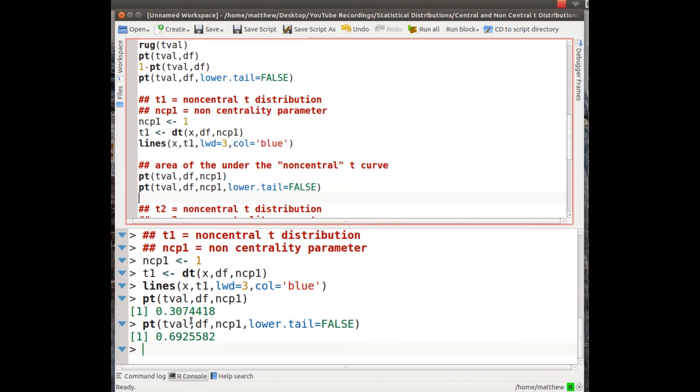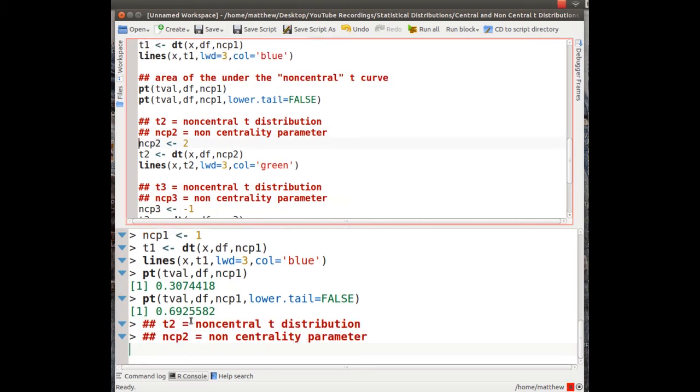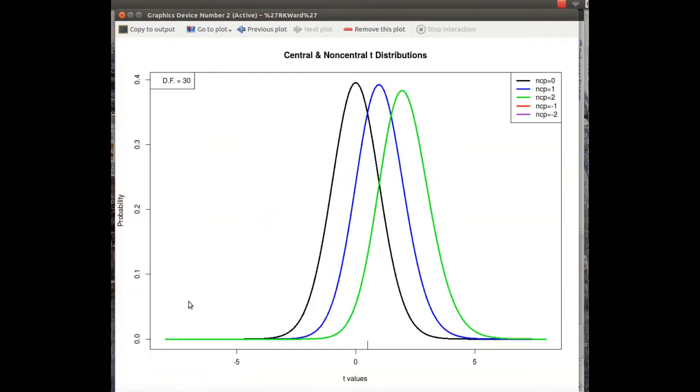Now let's look at increasing the non-centrality parameter to 2, and plot the function. And it's shifted to the right, so there's even less area under this curve shifted to the right. And the more we increase positively the non-centrality parameter, it keeps going this way.